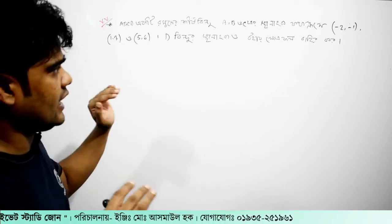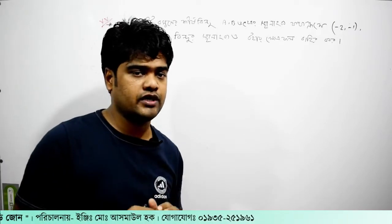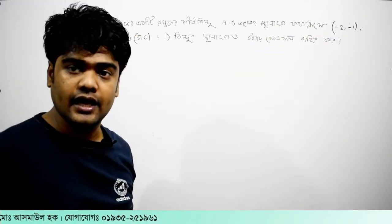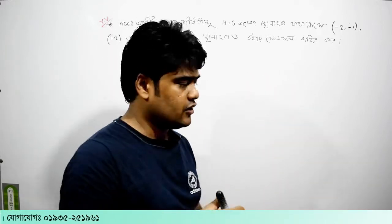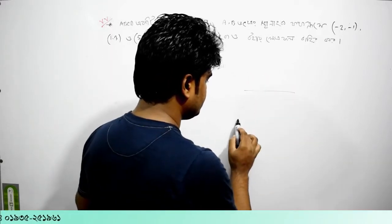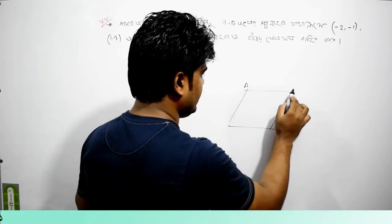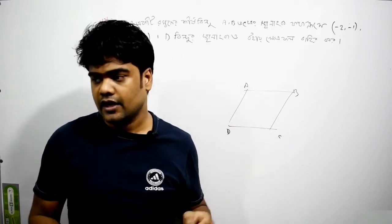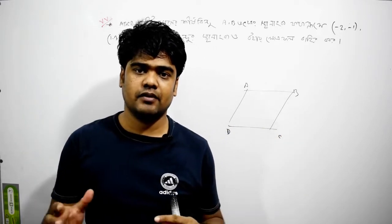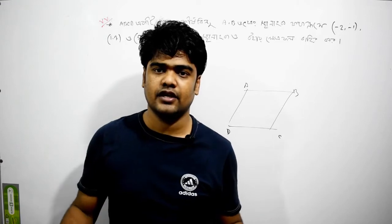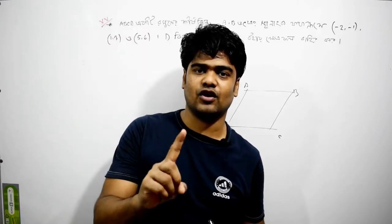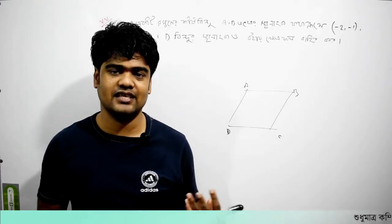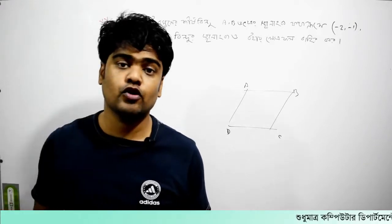First of all, this is what we do. This is a rhombus — a proper rhombus. If you have a rhombus, you can see that. This is a rhombus. Even if you follow the rhombus, you can see that. So, this rhombus is a rhombus.